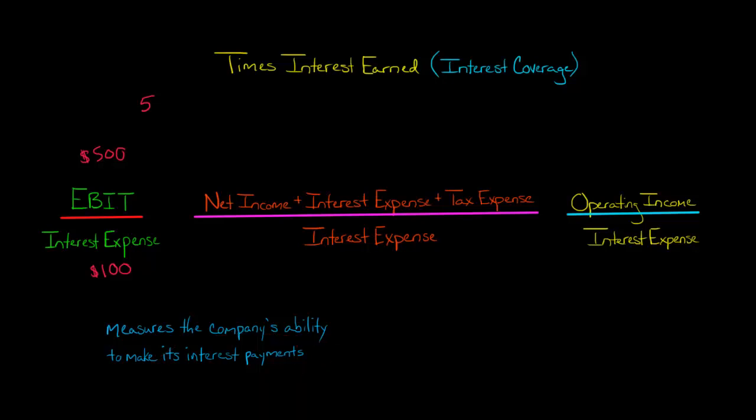There are a couple different ways that analysts would go about calculating times interest earned. One way is to take a company's net income and then add back interest expense and income tax expense, and then divide by interest expense.